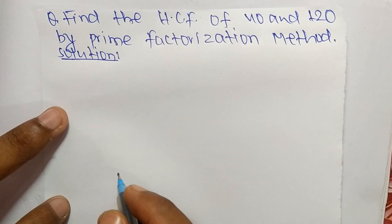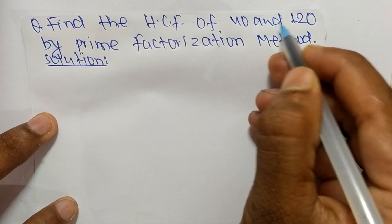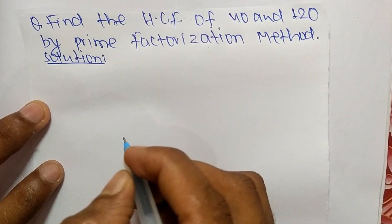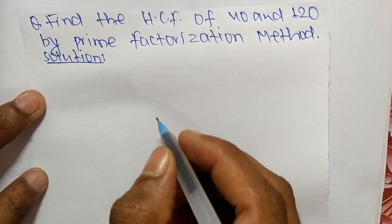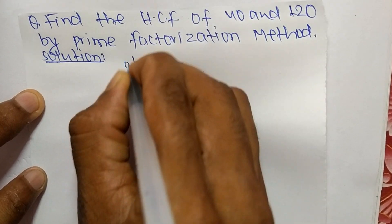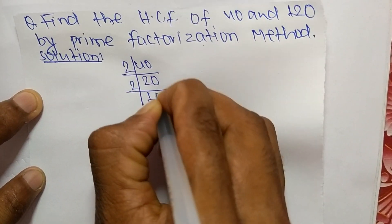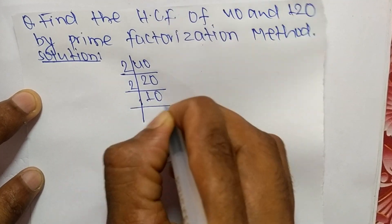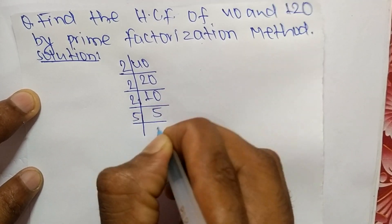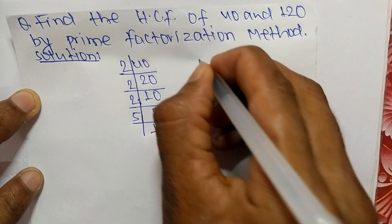Today in this video we shall learn to find the HCF of 40 and 120 by prime factorization method. First we find out the prime factors of 40: 2 times 20 equals 40, 2 times 10 equals 20, 2 times 5 equals 10, and 5 times 1 equals 5. So the prime factors of 40 are 2, 2, 2, and 5.